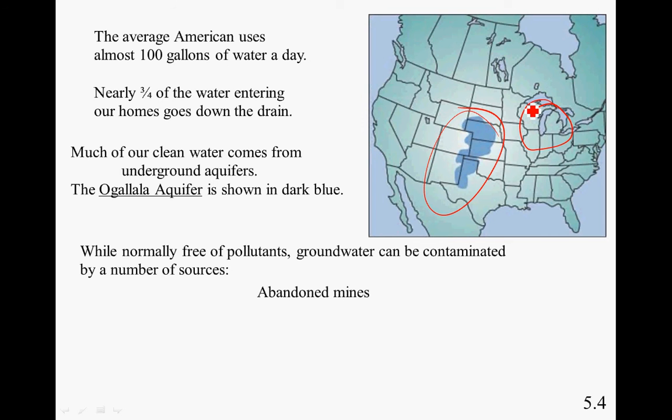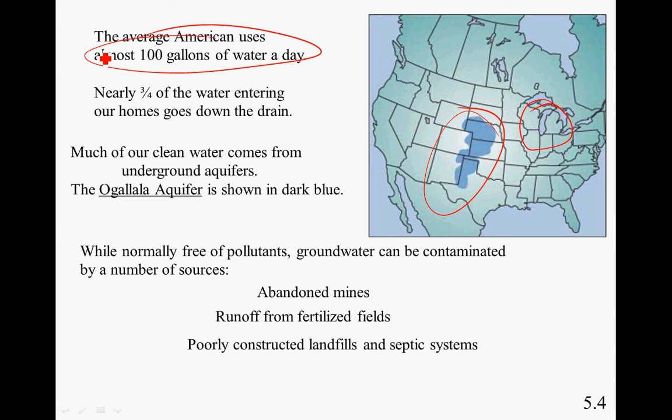The average American uses 100 gallons of water a day. Three quarters of this goes down the drain and wasted from brushing your teeth, taking showers, things along those lines. We are also harming the water in other ways too. We are adding pollutants to the ground water by using fertilizers and landfills to the chemicals in the ground. Fertilizers, landfills, chemicals, that's all poisoning our water.